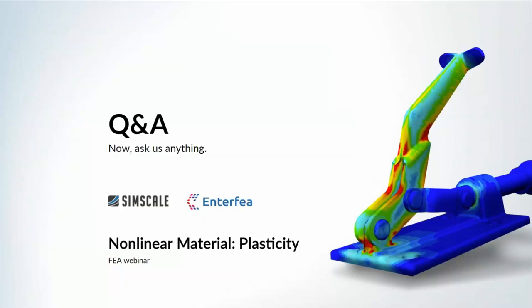Even though I showed that if a big area yields the model can be unstable — to analyze that you use nonlinear geometry — you can do plastic redistribution without nonlinear geometry. But to analyze your model properly, for example according to Eurocode, nonlinear geometry will play a role in verifying stability. I would advise using both nonlinear material and nonlinear geometry. For the rock example alone though, nonlinear geometry is not needed.